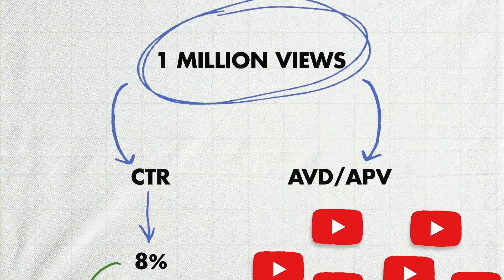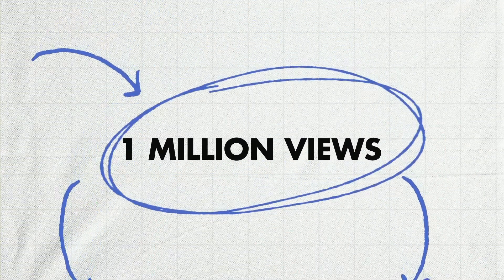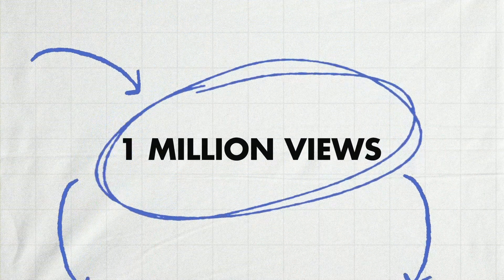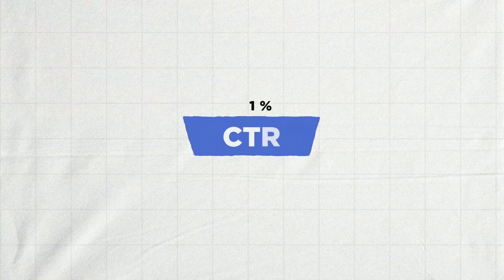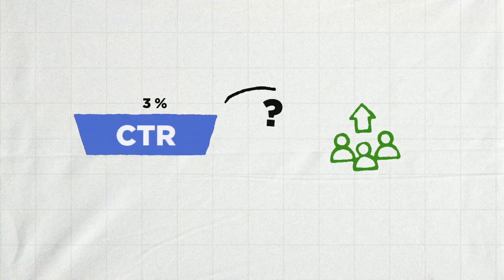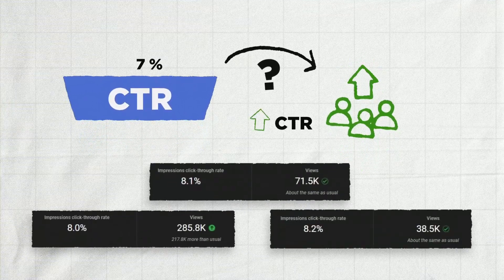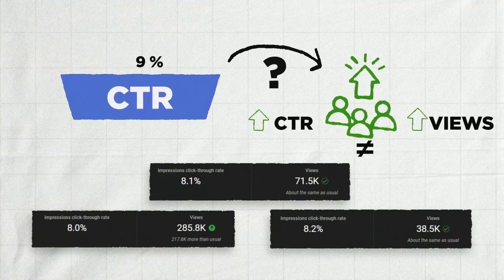In fact, this is a very flawed approach. What we're trying to achieve is more views — we're not trying to get higher CTR. We only want higher CTR if that gives us more views. When you do an analysis on your own channel, you'll often find that an increase in CTR does not actually mean an increase in views, and lower CTR doesn't necessarily mean lower views.